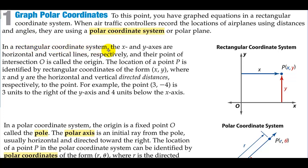In a rectangular coordinate system, the x and y axes are horizontal and vertical lines respectively, and their point of intersection O is called the origin. The location of a point P is identified by rectangular coordinates of the form (x,y), where x and y are the horizontal and vertical directed distances respectively to the point. For example, the point (3,-4) is 3 units to the right of the y-axis and 4 units below the x-axis.